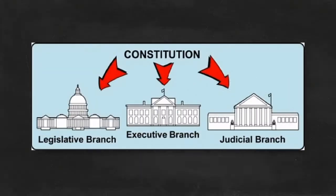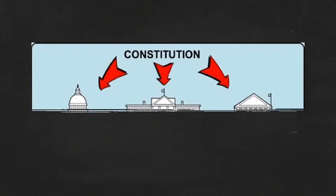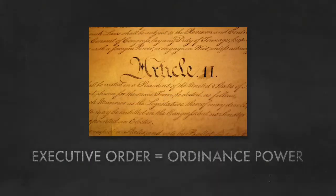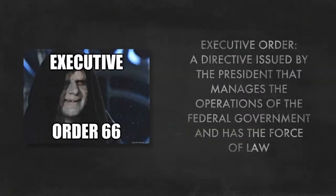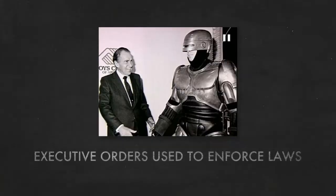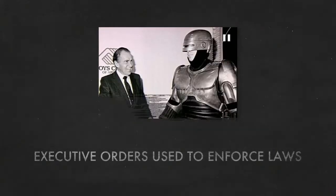The executive branch creates policy in another way. The power of the president to issue executive orders can be found in Article 2 of the Constitution. It's also referred to as the ordinance power. An executive order is a directive issued by the president that manages the operations of the federal government and has the force of law. The president uses executive orders to help enforce the laws.